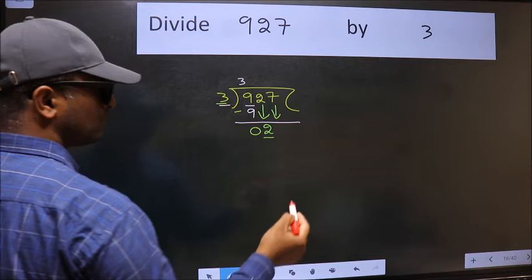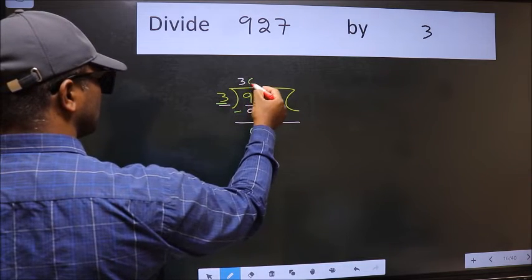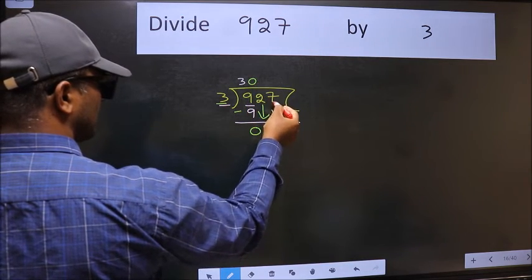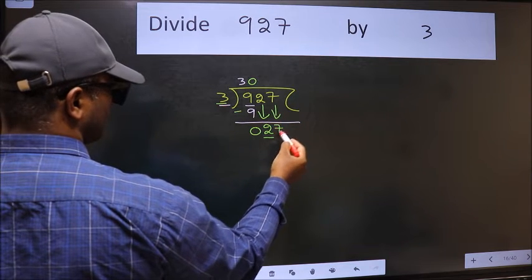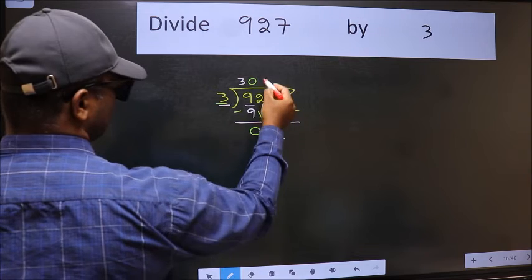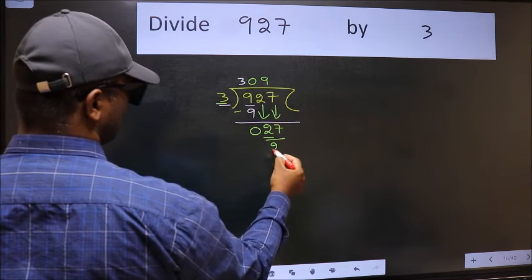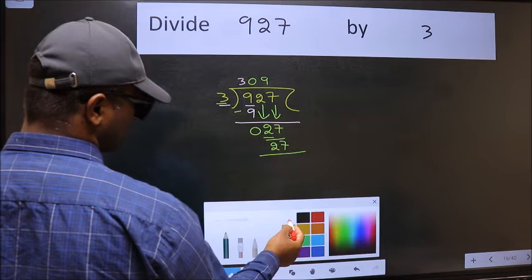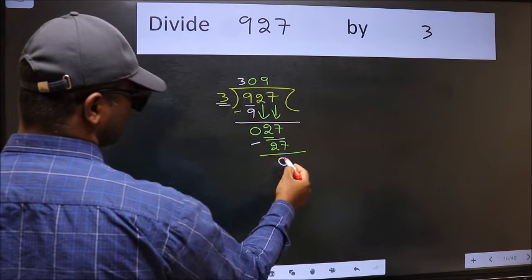And the rule to bring down the second number is we should put 0 here. Then only we can bring down this number. Now 27. When do we get 27 in 3 table? 3 nines, 27. Now we should subtract. We get 0.